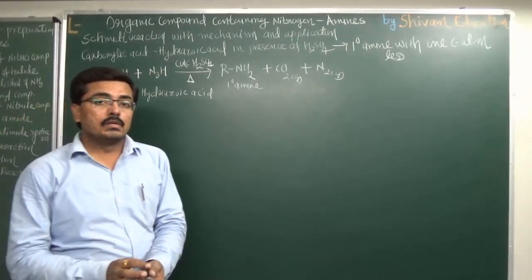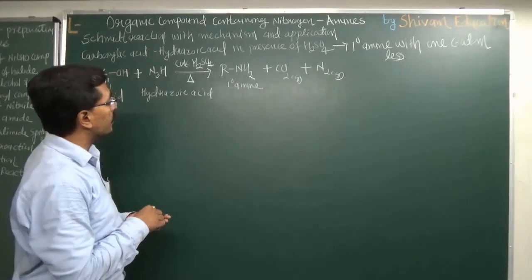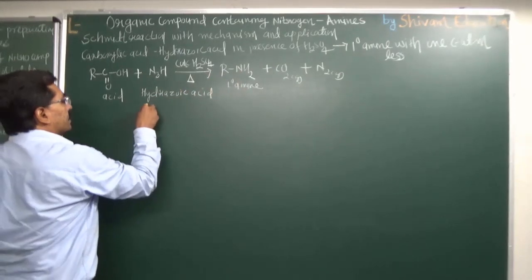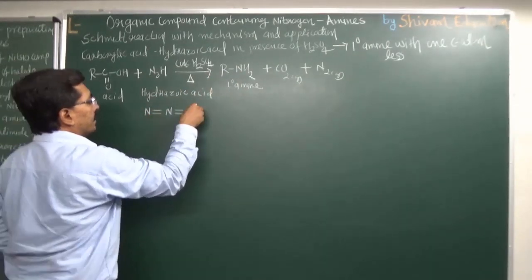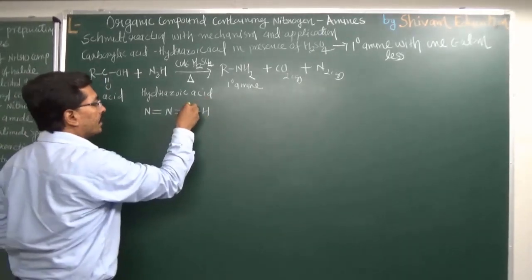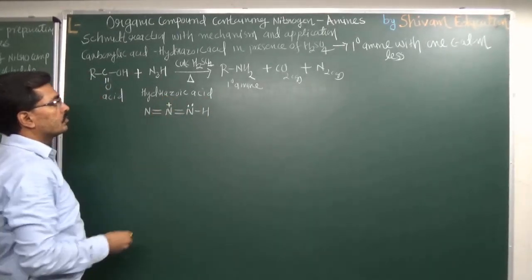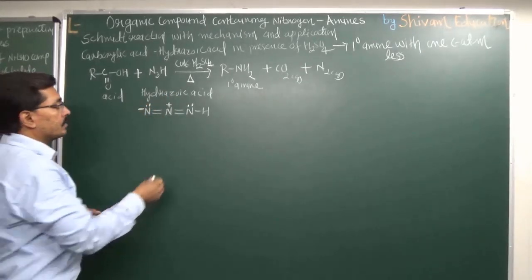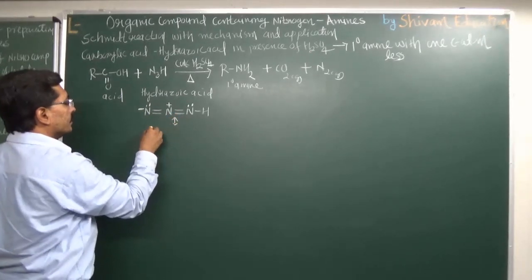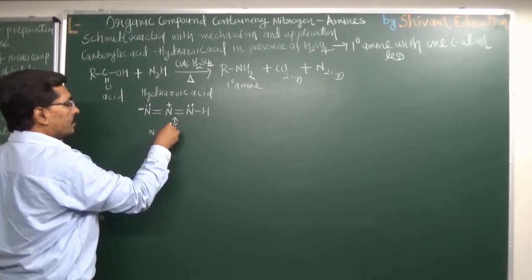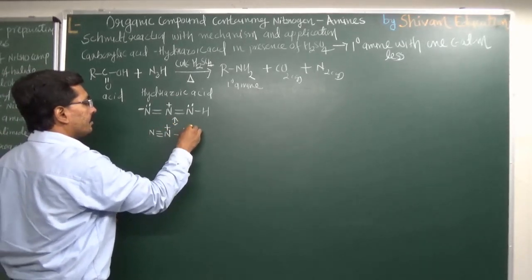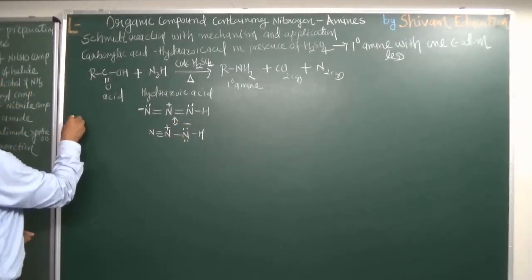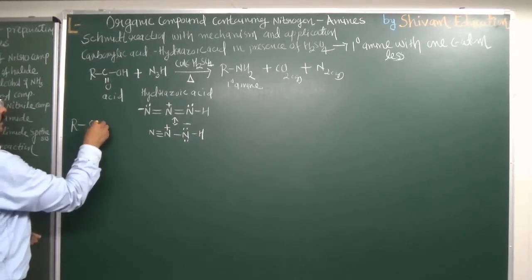To understand the mechanism, first we need to understand the structure of hydrazoic acid, N₃H. It has nitrogen-nitrogen bonding with this type of structure — one nitrogen has a non-bonding electron pair with a positive charge, and another nitrogen has a negative charge. This is a resonating structure. Alternatively, we can write it as nitrogen having a triple bond with nitrogen with a positive charge, and the other nitrogen having two non-bonding electron pairs and a negative charge.